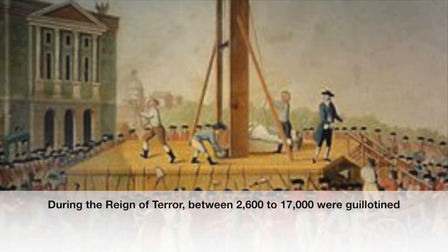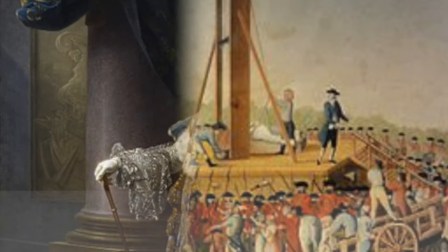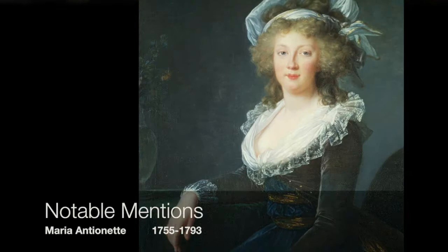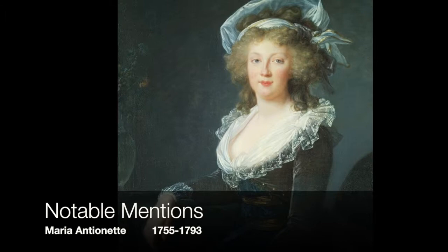Now for some quick notable mentions. First off, we have King Louis XVI, who was sent to the guillotine in January 1793, convicted of conspiracy with foreign powers. Several months later, his wife Marie Antoinette was also sent to the guillotine in October 1793, charged with high treason.